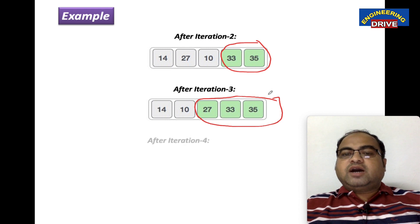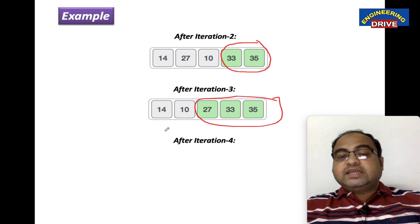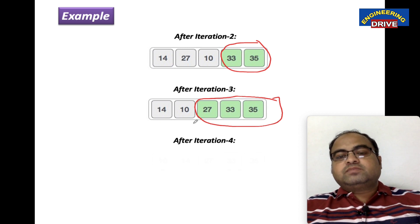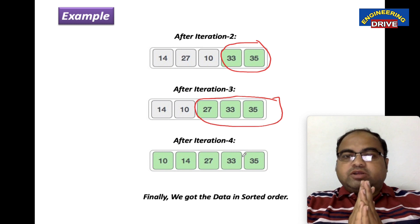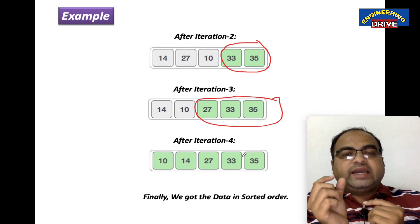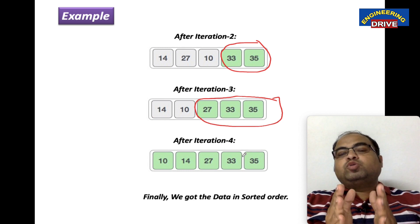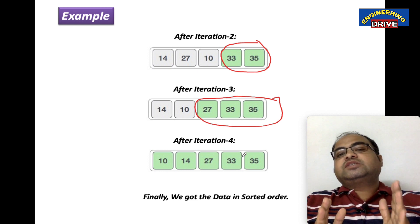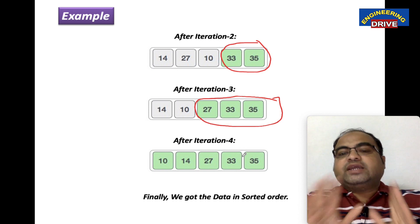After iteration 4, only two numbers remain to compare. 14 is less than 10 — condition false, so we swap those two numbers. After the swap we get the final answer, and the data is now in sorted order. In bubble sort we compare two numbers at a time, placing the largest numbers on the right side, and after iteration 4 we have the final sorted result.